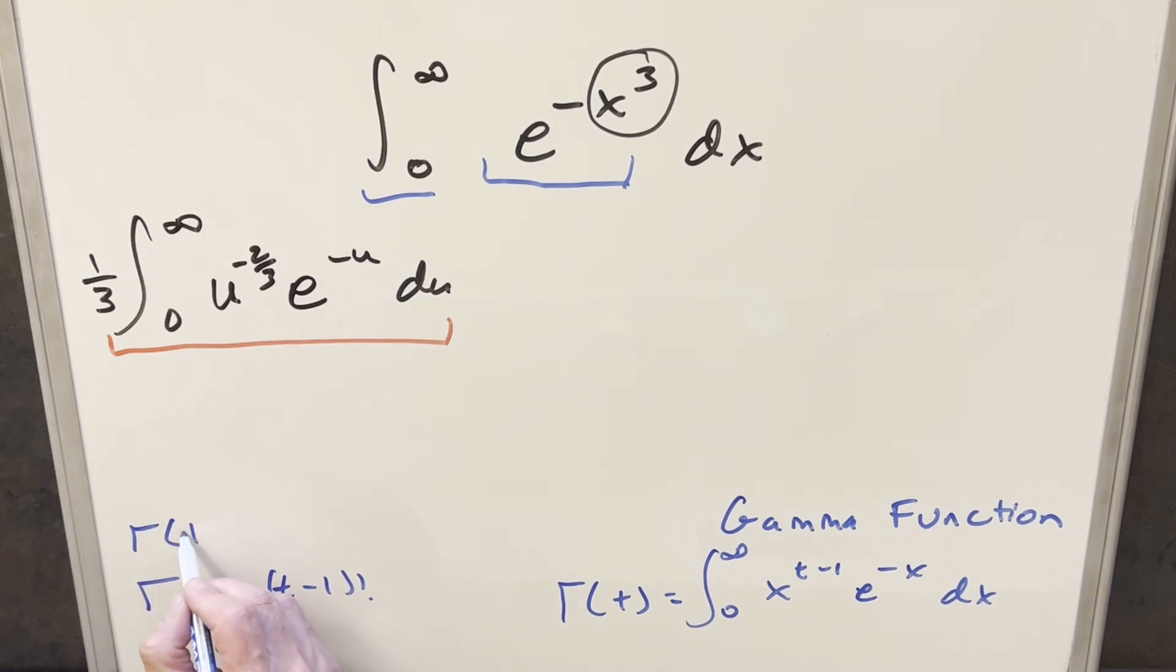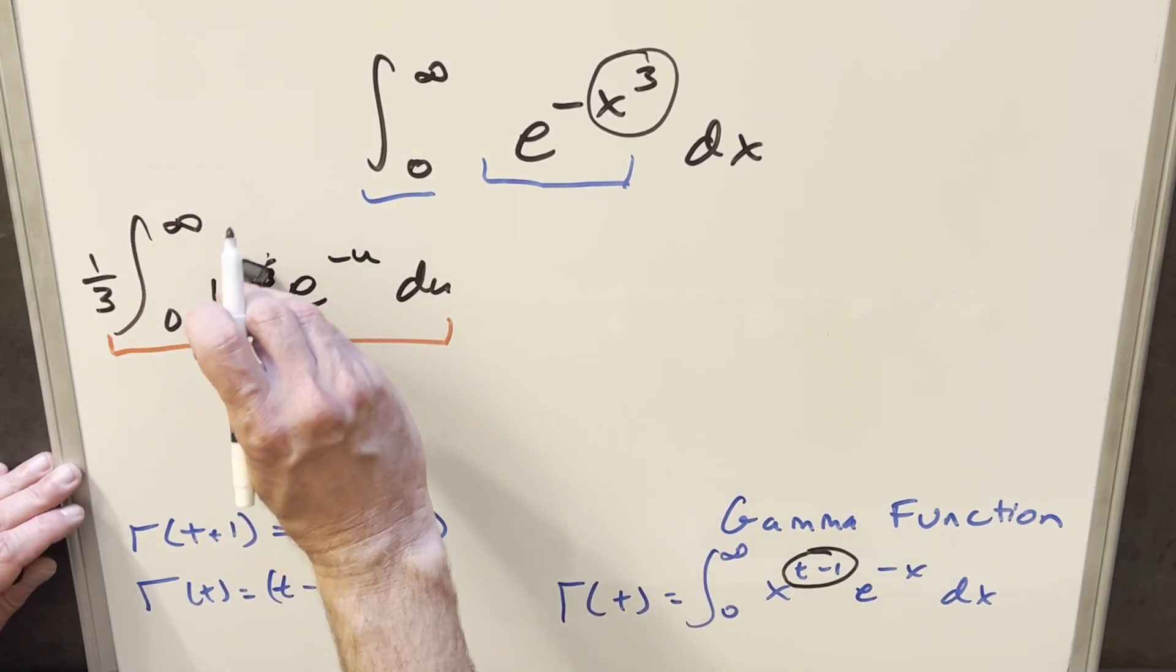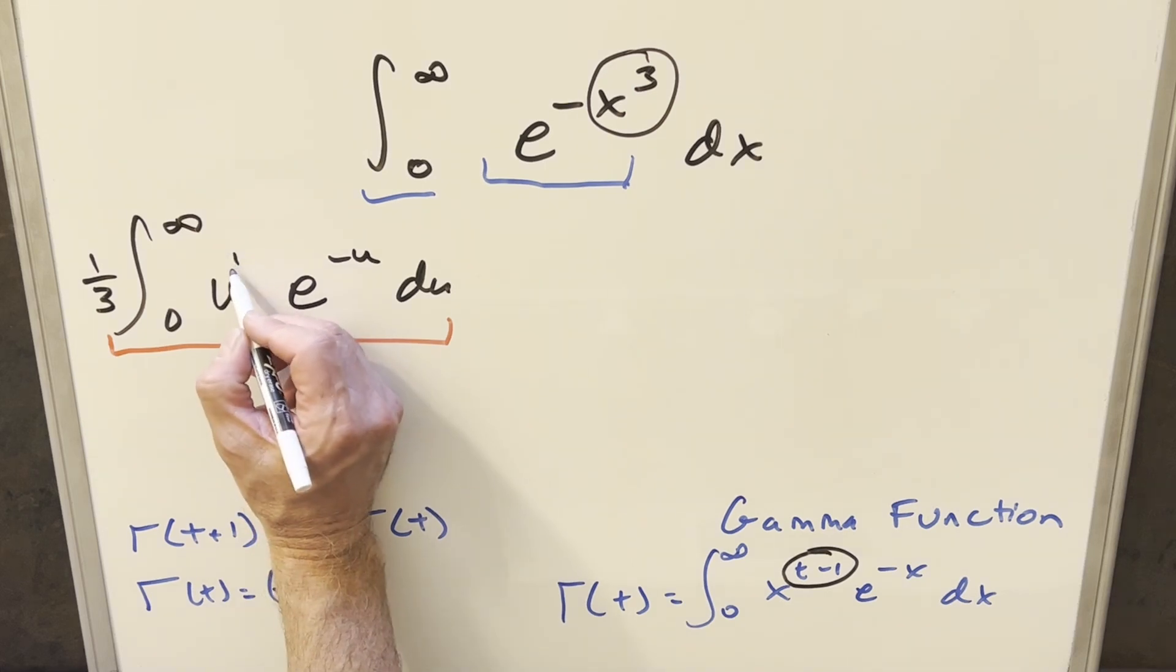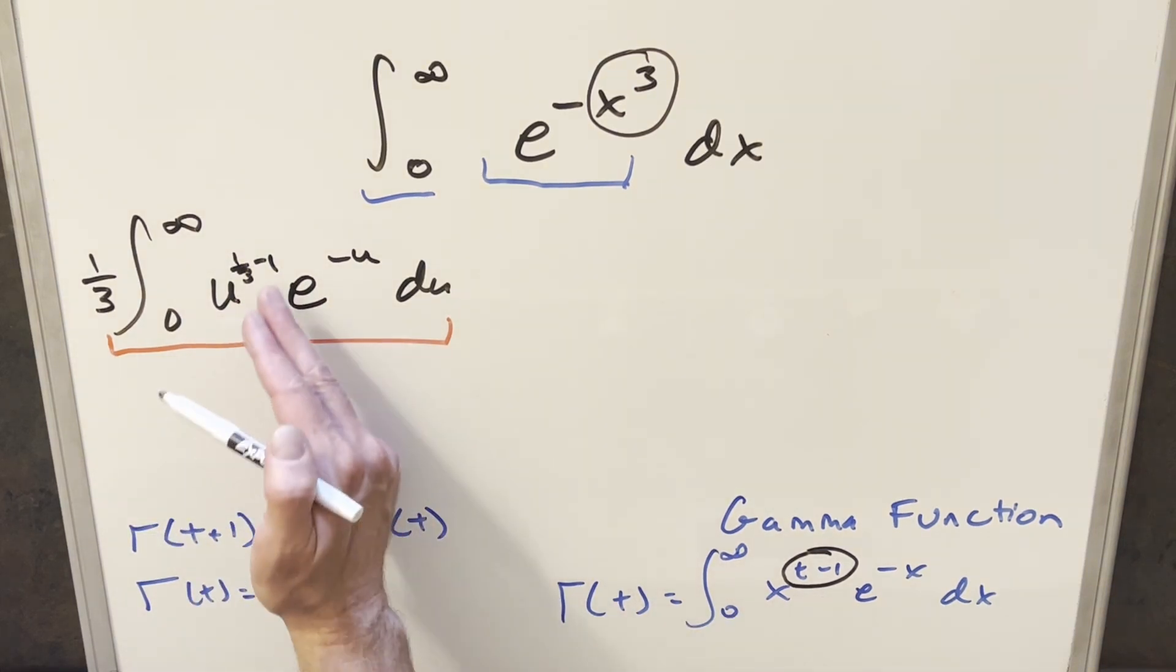We also have the property Γ(t+1) = t·Γ(t). Before we proceed, to get this in the right format, the exponent in the gamma function is t-1. Here we have -2/3. I can rewrite -2/3 as 1/3 - 1. We haven't changed it, but now we're in the correct format, subtracting off one.